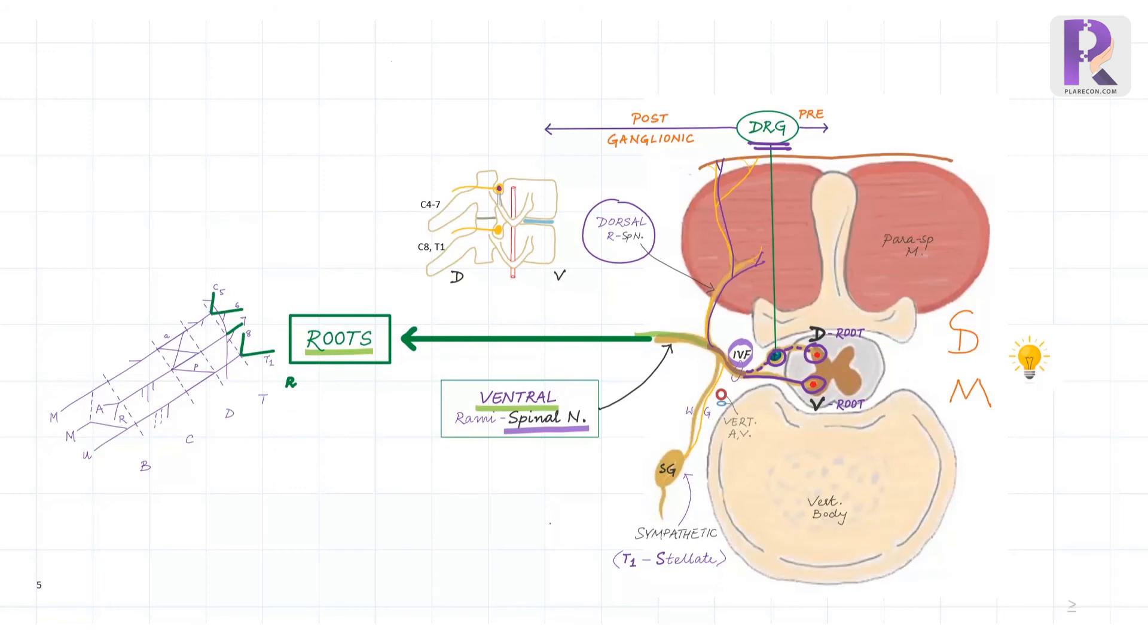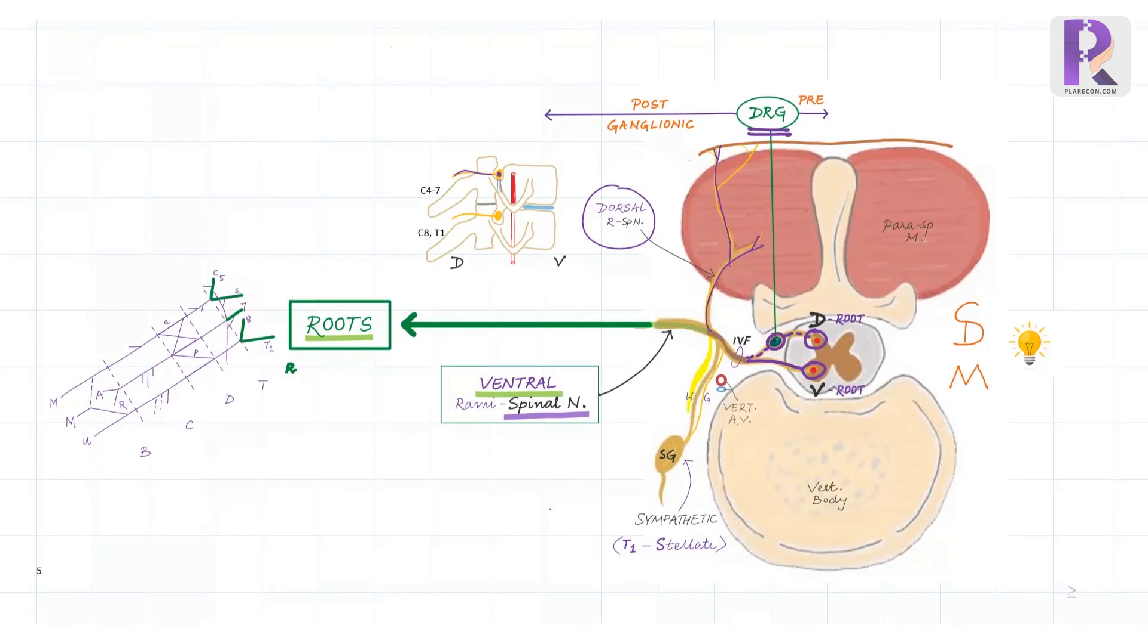We can see the same in the section here. Anterior to the spinal nerve lies the vertebral artery and the vein. Now, apart from the ventral and the dorsal rami, the spinal nerve also gives out white and gray communicants carrying sympathetic fibers to and from the sympathetic ganglions. Now closest to T1 is the stellate ganglion. Note that based on the dorsal root ganglion which has the cell bodies of the peripheral sensory nerves, the brachial plexus can be divided into pre-ganglionic or post-ganglionic.